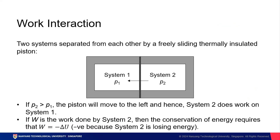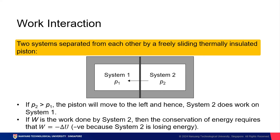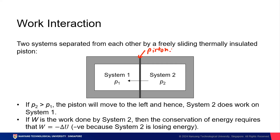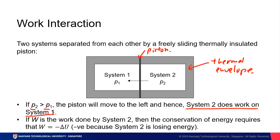When it comes to work, consider two systems separated from each other by a freely sliding thermally insulated piston, also in a thermal envelope so the system doesn't lose heat to its surroundings. If the pressure of system two exceeds the pressure of system one, the piston will move to the left — system two is doing work on system one. If W is the work done by system two, conservation of energy requires that W equals negative delta U, because system two is losing energy as it does work on system one.